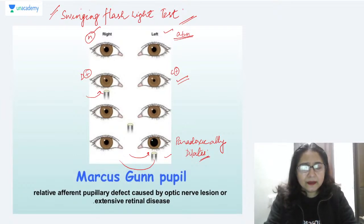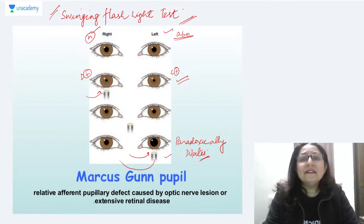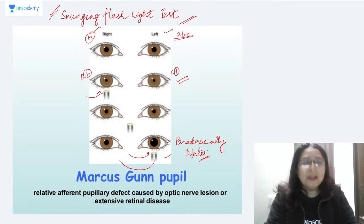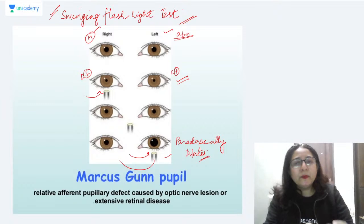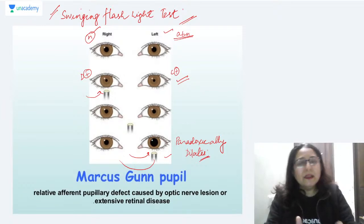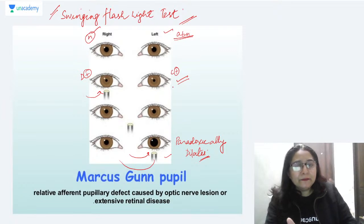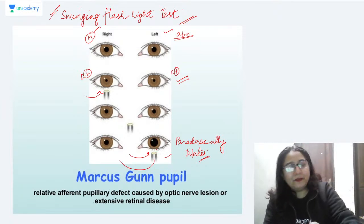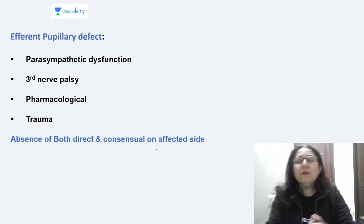Why is the swinging flashlight test not used for absolute afferent pupillary defect? There is no need, because in absolute APD, the light reflex is completely absent due to total afferent pathway abnormality. The swinging flashlight is needed only when the defect is incomplete — as in RAPD.